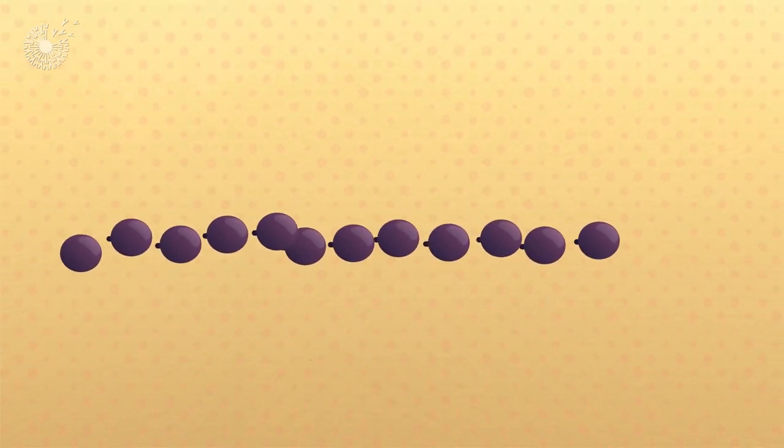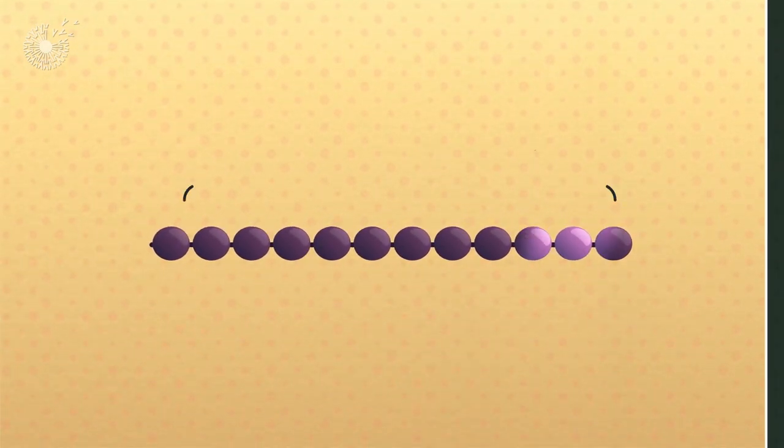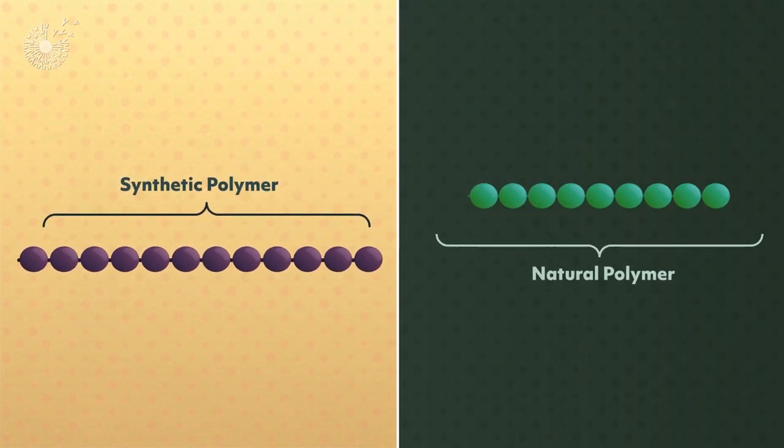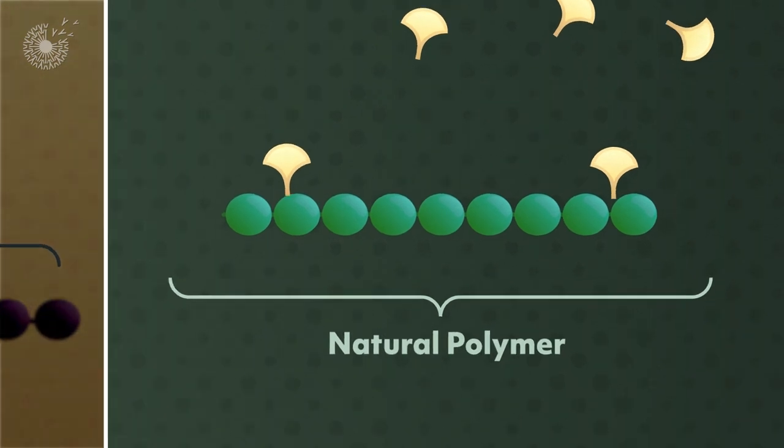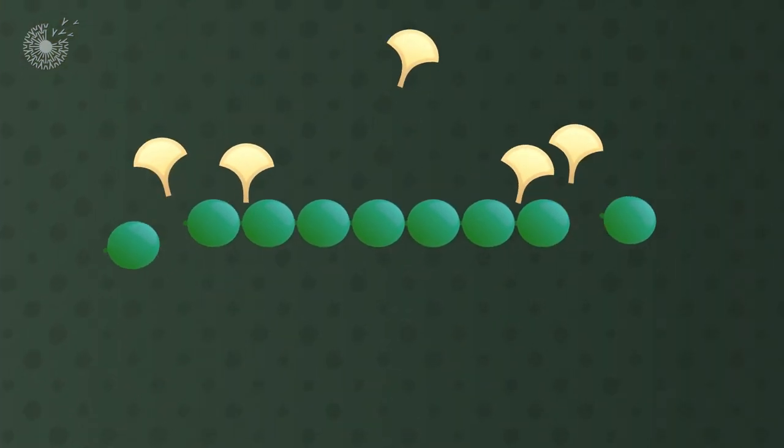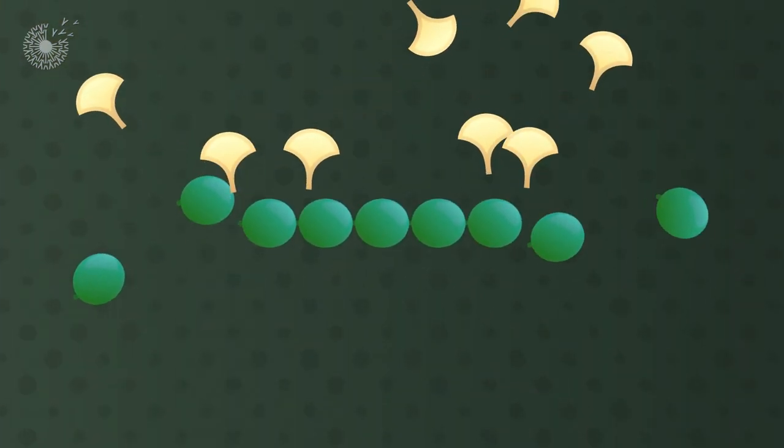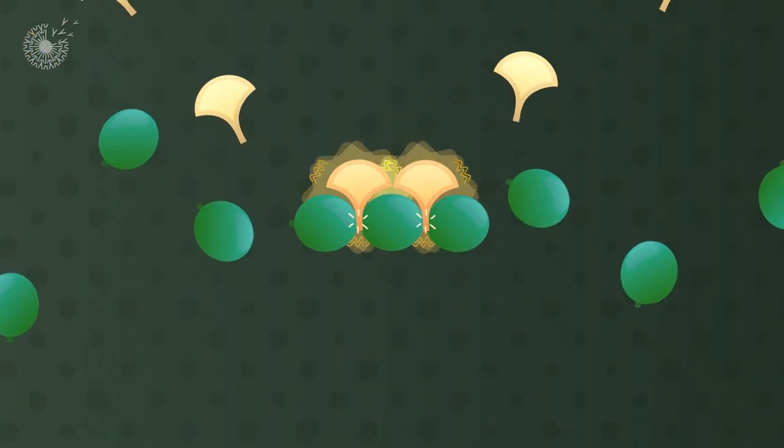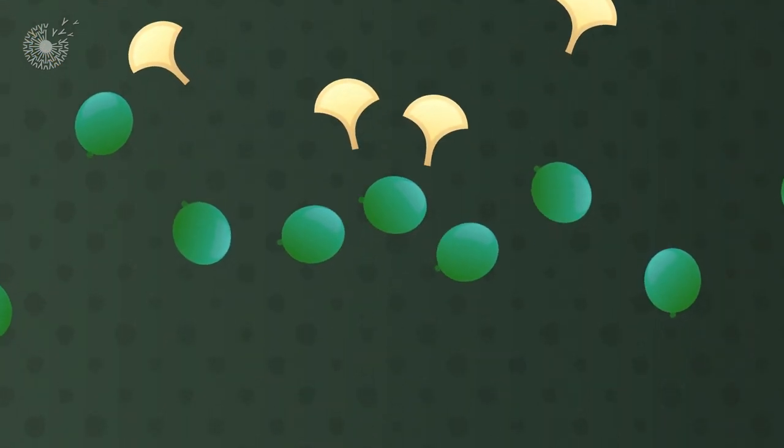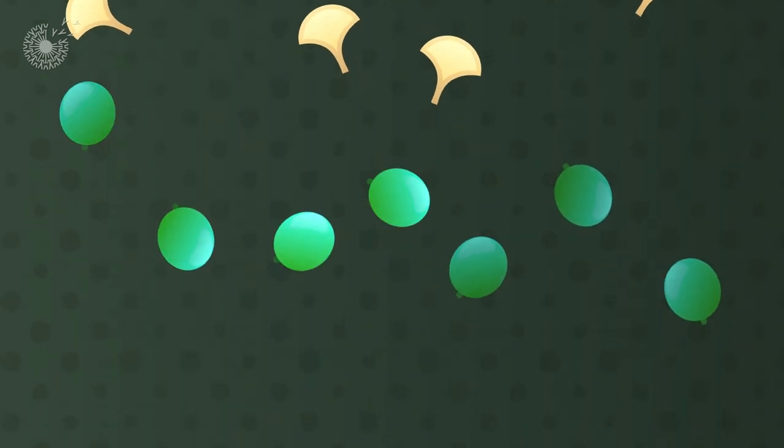Plastics are made of repeating units of molecules called monomers, which are bonded together to form long, sturdy chains called polymers. Organisms of all kinds produce enzymes that can break down complex molecular chains like these, precisely shaped to fit into the bonds between monomers. They catalyze chemical reactions that unlock the bonds and break the chain back into separate links.